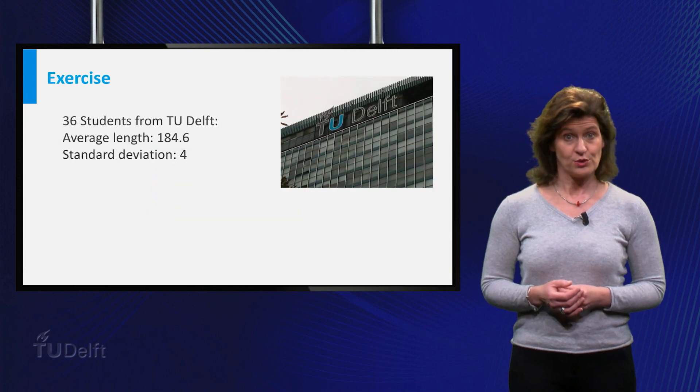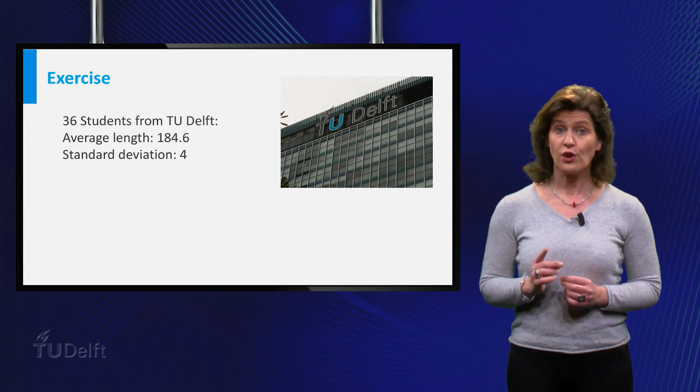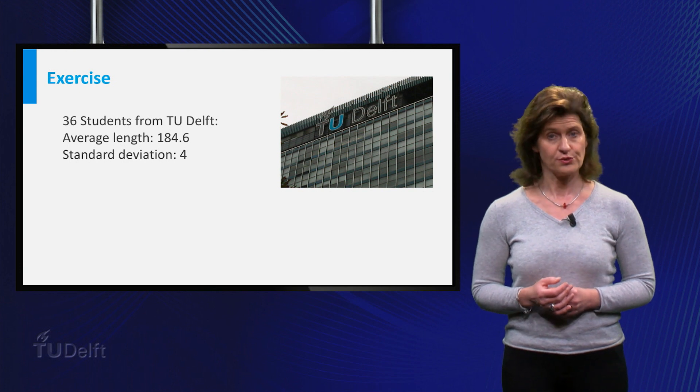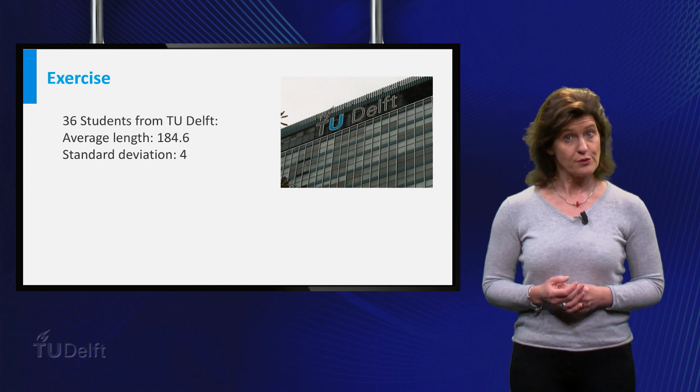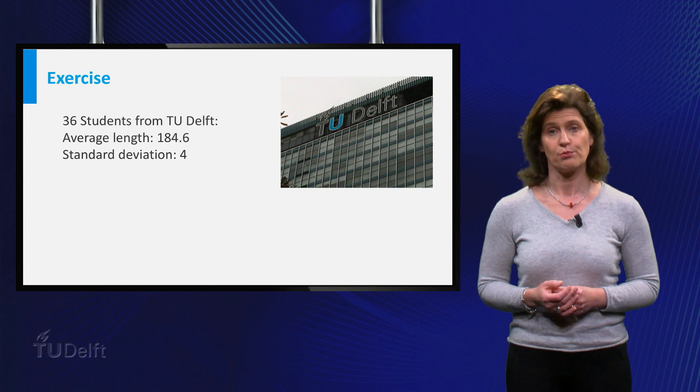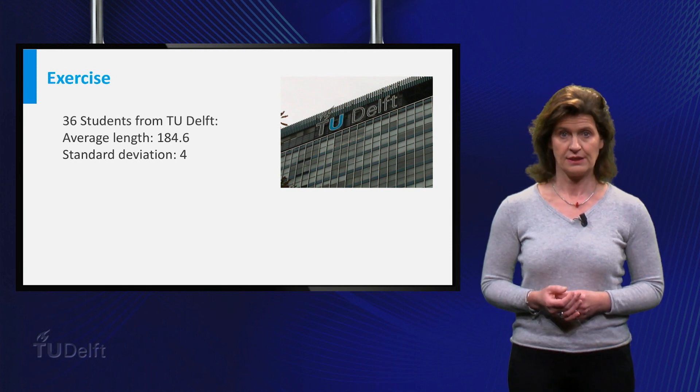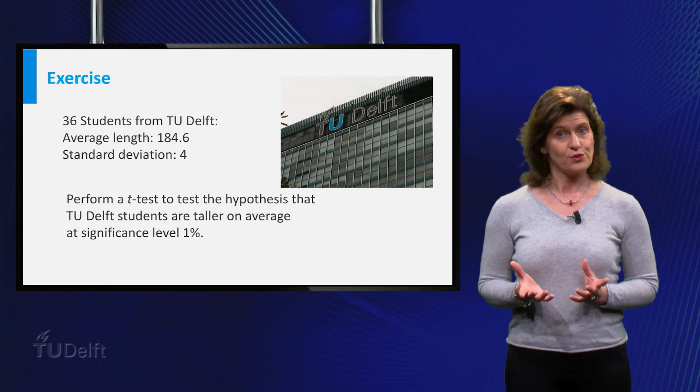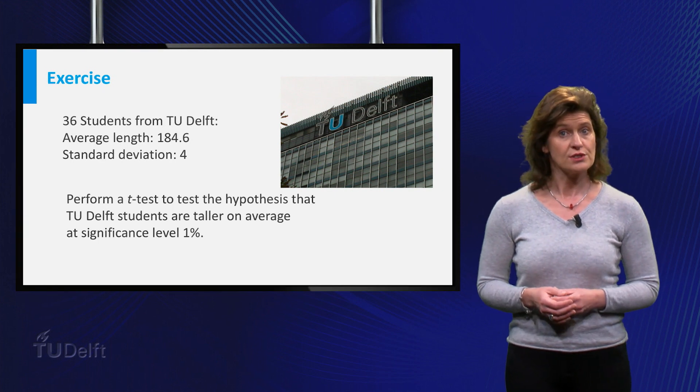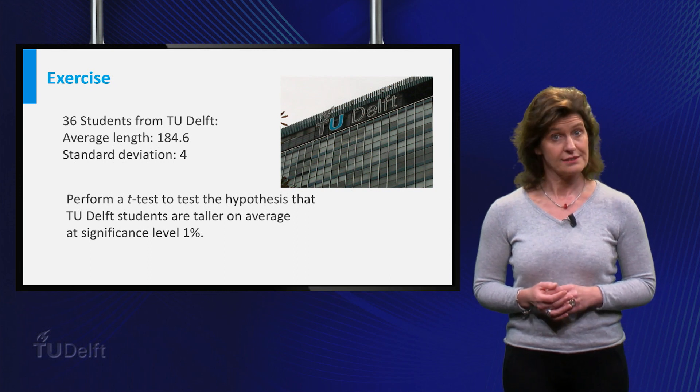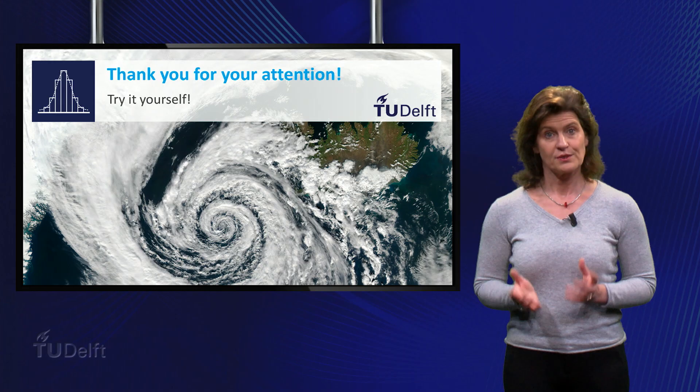To check if you understood this well, perform the test for the following data. Thirty-six students from the Technical University of Delft are measured. Their average length is 184.6 with a standard deviation of 4 cm. Can you conclude from these data that Delft students are taller on average, at a significance level of 1%? Good luck!